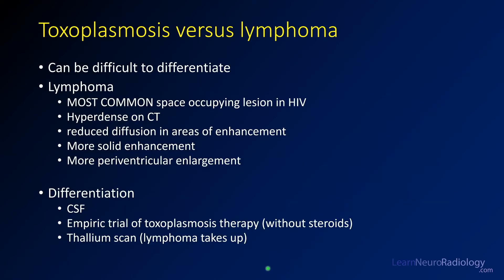It can be difficult to differentiate toxoplasmosis and lymphoma. Lymphoma is the most common space-occupying lesion in HIV. Features pointing toward lymphoma include: it tends to be hyperdense on CT, the areas of enhancement often have reduced diffusion, it tends to be solid enhancement, and periventricular involvement with mass-like enlargement around the ventricles. You can do tests to try to differentiate these, though it can be challenging.